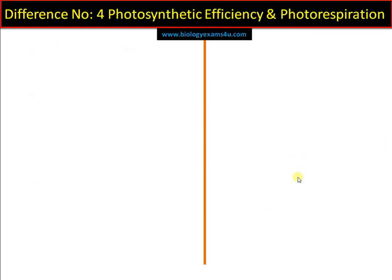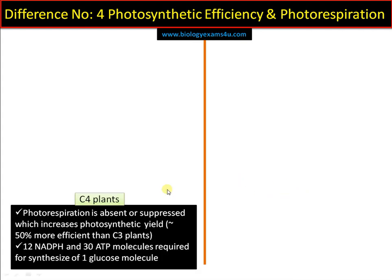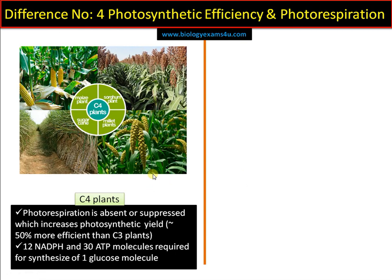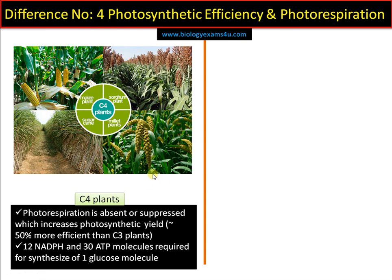Difference number four: photosynthetic efficiency and photorespiration. In C4 plants, photorespiration is absent or completely suppressed, and there is high photosynthetic yield compared to C3 plants. However, for the transport of acids from mesophyll cells to bundle sheath cells, ATP is used — 30 ATP molecules are required for the synthesis of one glucose molecule, compared to 18 ATP in the C3 cycle — but still, photorespiration is avoided.